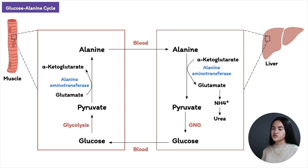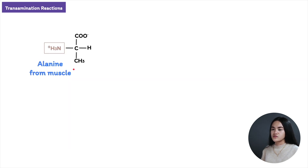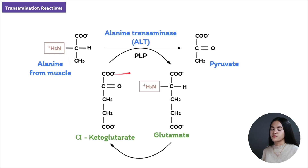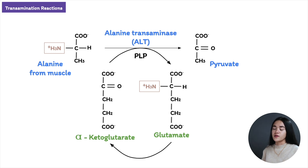Let's take a closer look at this transamination reaction. Alanine transfers its amino group to alpha-ketoglutarate, forming pyruvate and glutamate. Once alpha-ketoglutarate accepts that amino group, it becomes glutamate. Pyruvate can then be converted back to glucose via gluconeogenesis — and that is the glucose-alanine cycle.